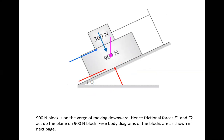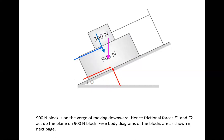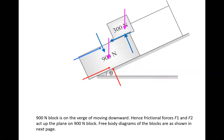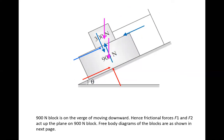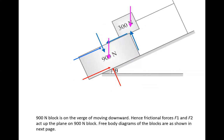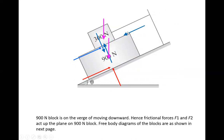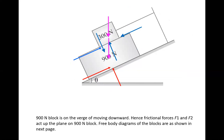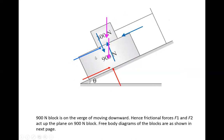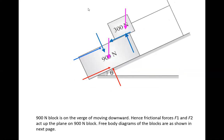Friction forces act upwards at both contact surfaces. Relatively, the 300 Newton block will have an upward relative motion with respect to the 900 Newton block, so the frictional force on the 300 Newton block acts downwards. That is how the forces act during the sliding of the 900 Newton block downwards.